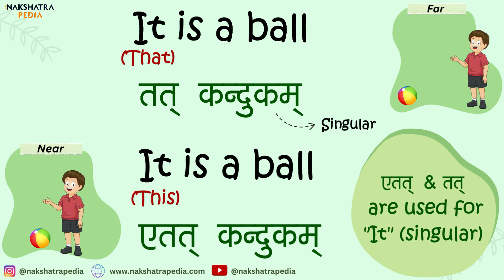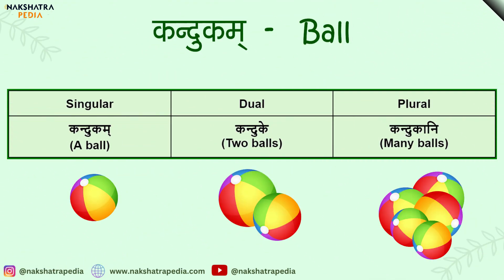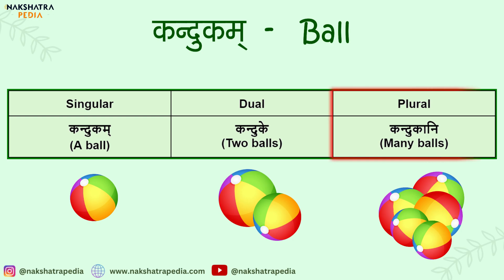Because we will use dual and plural of etat, kandukam should also be dual and plural. Let's quickly check all the forms of a neuter noun — singular, dual, and plural. If we have one ball, the singular form is kandukam. When there are two, it will be kanduke. And when there are many, it will be kandukani.